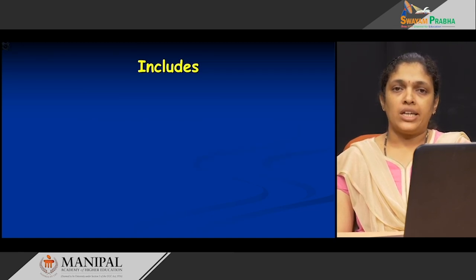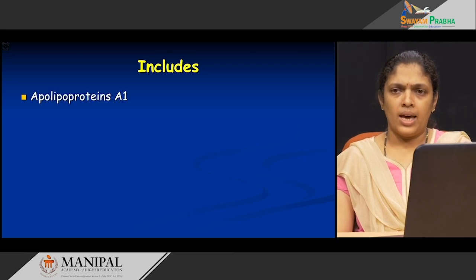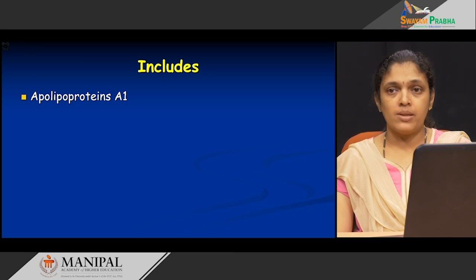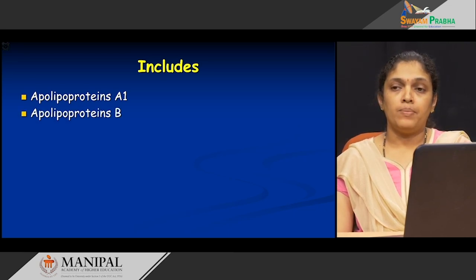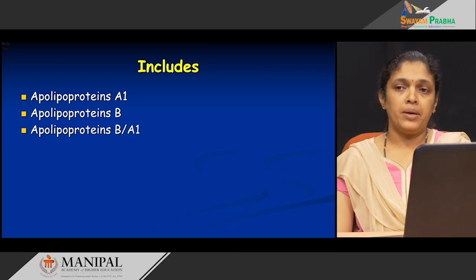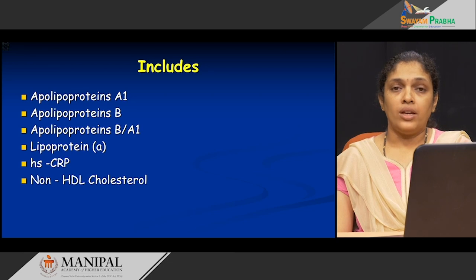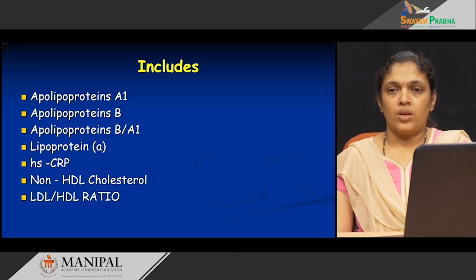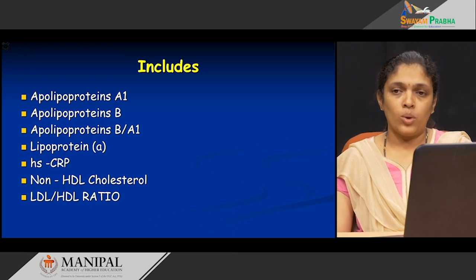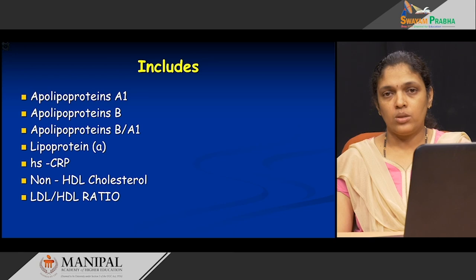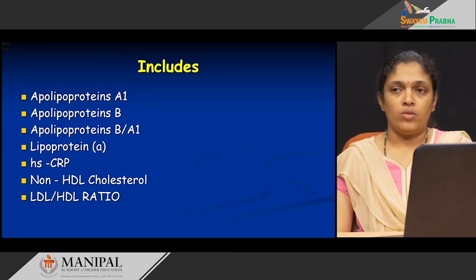What are the tests that are part of the extended lipid profile? There are many. As mentioned, apolipoproteins are part of the extended lipid profile: apolipoprotein A1, apolipoprotein B, the ratio of apolipoprotein B to A1, lipoprotein A, high sensitivity C-reactive protein (HSCRP), non-HDL cholesterol, and finally the LDL to HDL ratio. These are the tests which belong to the extended lipid profile panel.